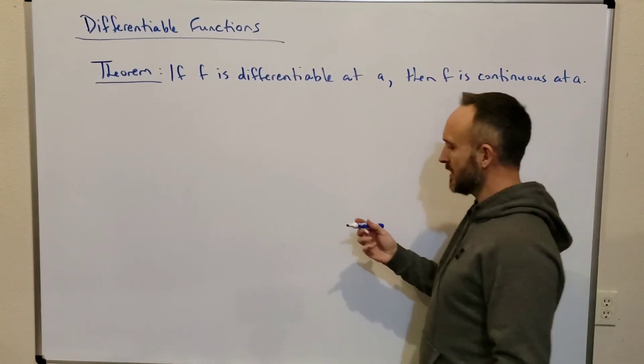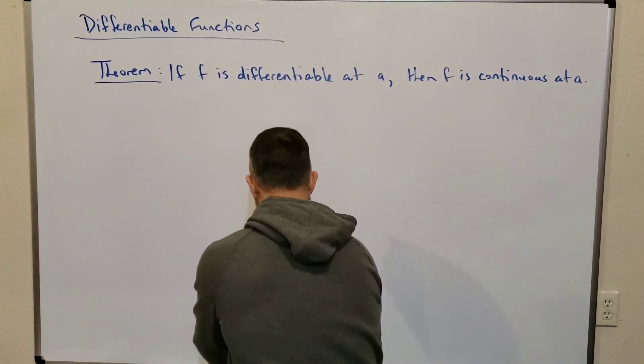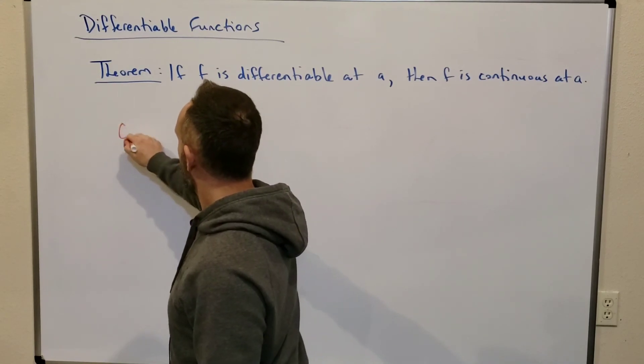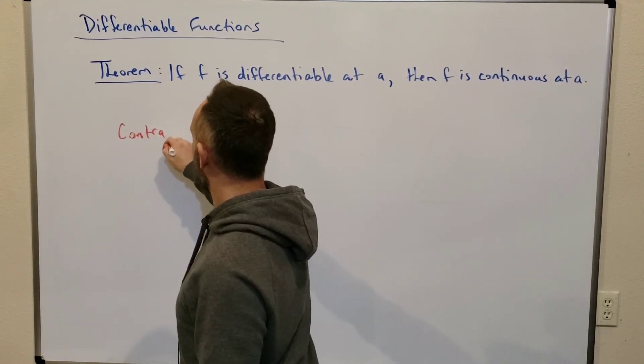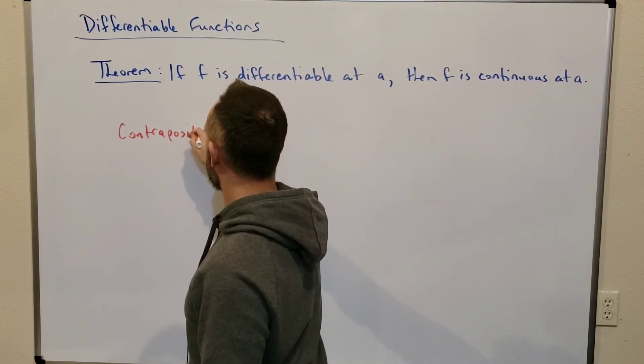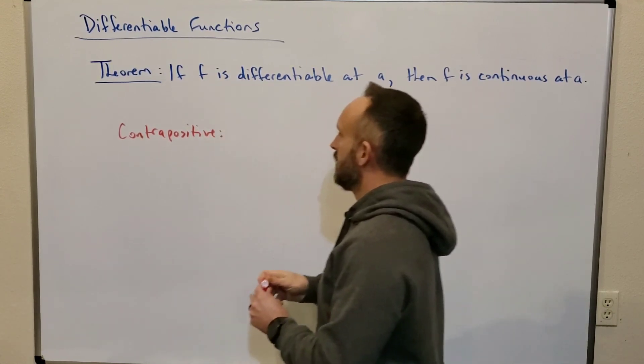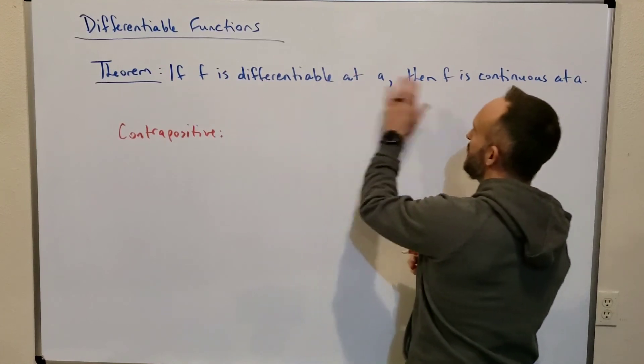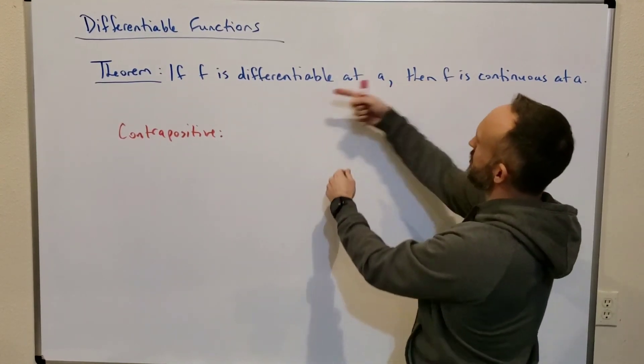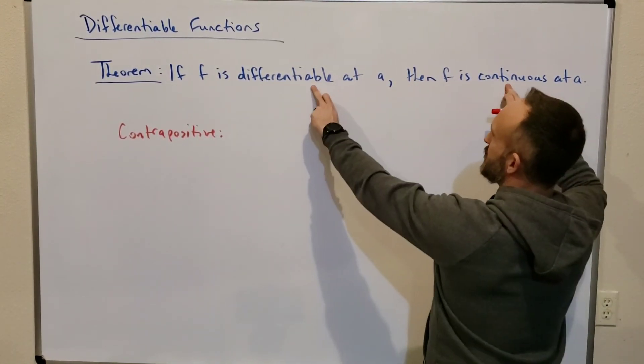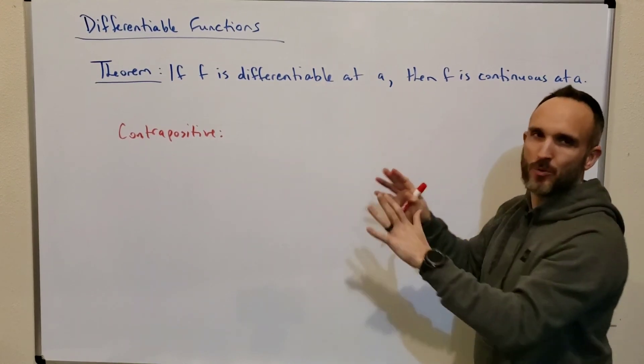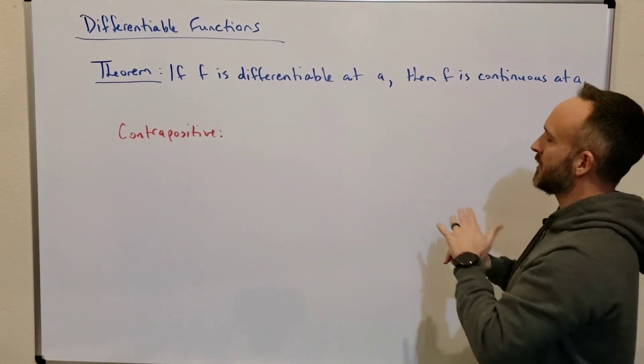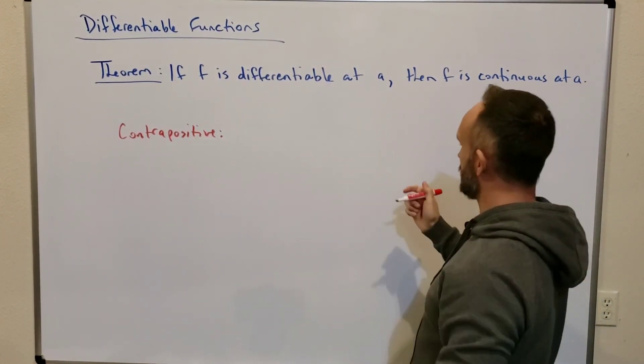However, if we look at what's called the contrapositive of this. So, if you take further math, you'll see this in future classes. But, the contrapositive guarantees that if you have an if-then statement, you can reverse it if you make both of these conditions opposite of what they are. That's a very rough description here. So, the contrapositive has to be true also, which would say, well.